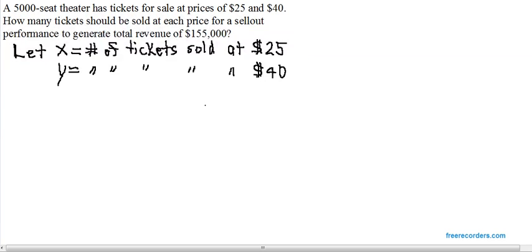Whenever you have two variables to find the values of each, you need two equations. Notice they're telling us that we have a sell-out performance. If we have a sell-out performance, how many tickets of both kinds were sold? 5,000, the capacity of the theater. So the number of $25 tickets plus the number of $40 tickets has to equal the total number of tickets sold, which for a sell-out would have to be 5,000. That's going to be one of our equations.